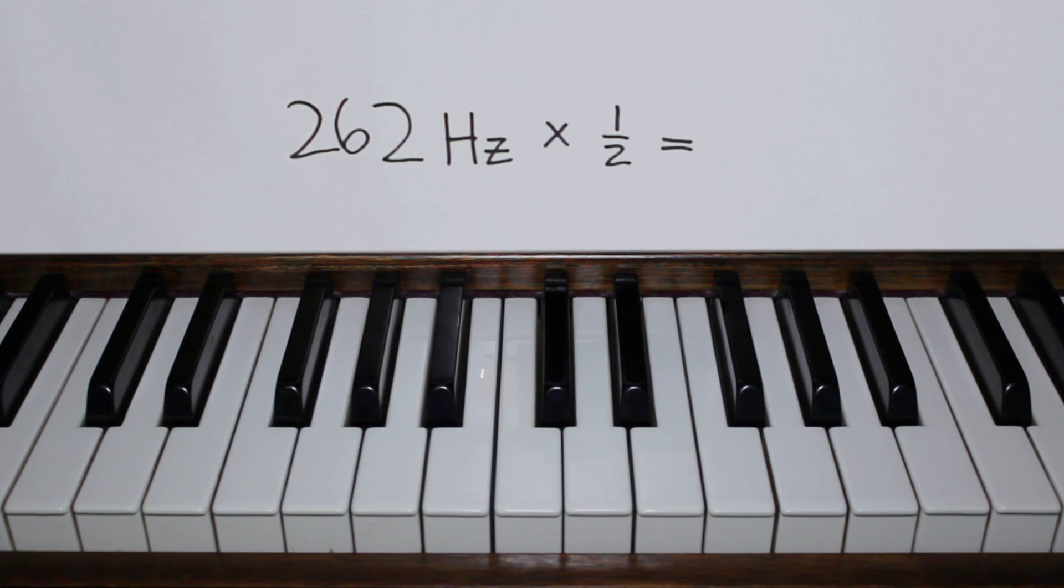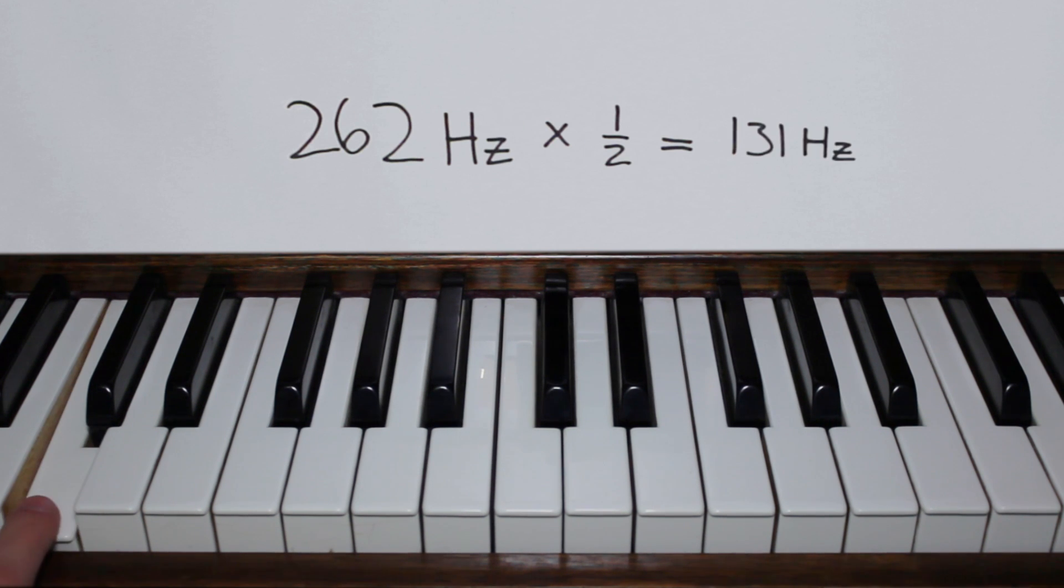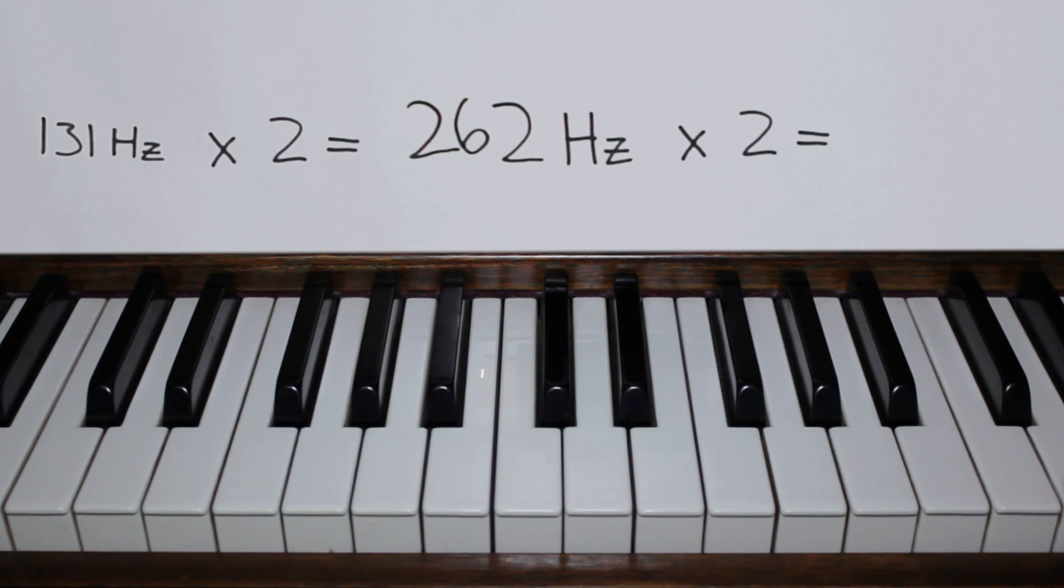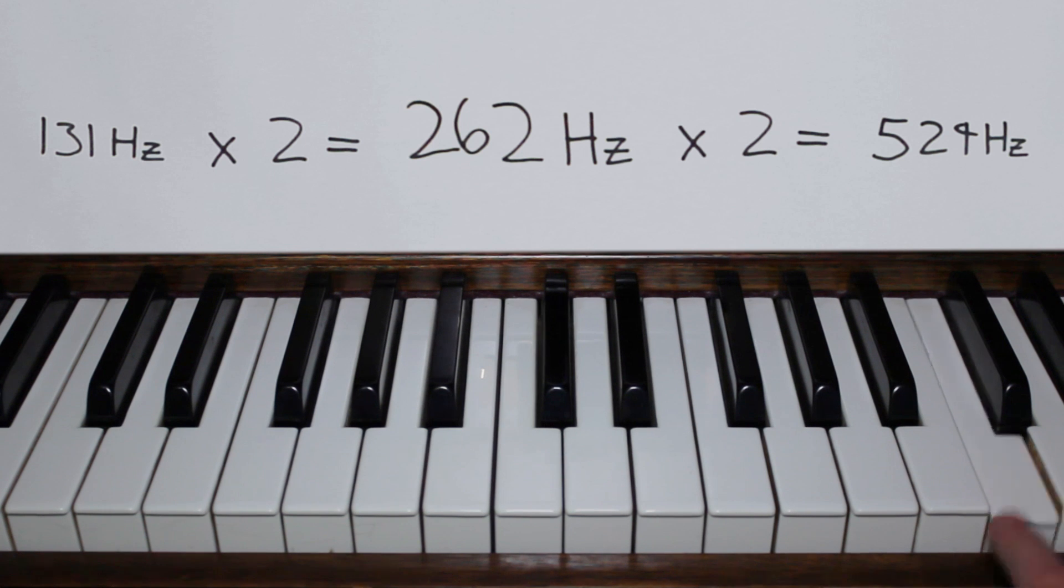Let's half the frequency. We get 131 hertz, which is C an octave down. Doubling the frequency gives us C an octave higher. You can hear how these notes are related.